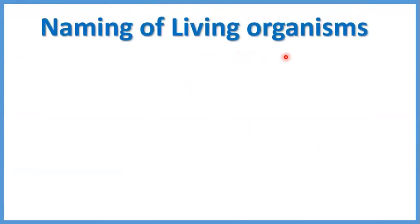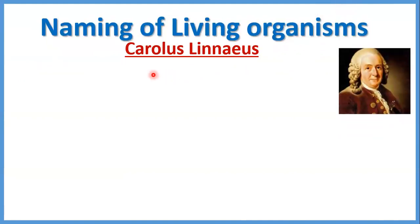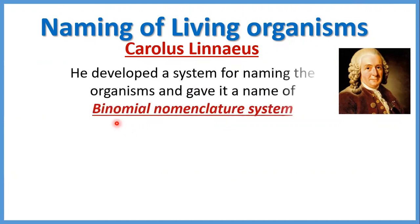Naming of living organisms — scientists ابتدوا إن هما يعملوا naming nomenclature للliving organisms. أول واحد ابتدى يعمل لها nomenclature وعمل system: scientist اسمه Carolus Linnaeus. عمل system للnomenclature سماه الbinomial nomenclature system — يعني binomial يعني أدى لكل living organism two names. طيب إيه الشروط بتاعة الnomenclature اللي حطاها Carolus Linnaeus.